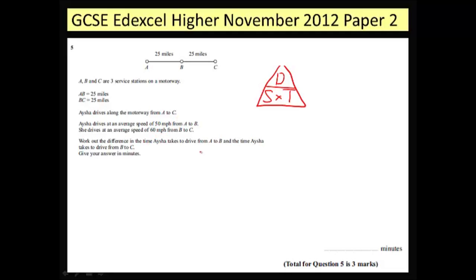So from A to B she drives 25 miles, so that's the distance 25, and the speed is 50 miles an hour. So I'm going to do 25 divided by 50 which is 0.5.